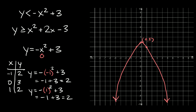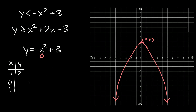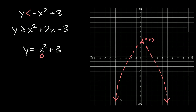Now that the parabola is graphed, the next thing we need to do is figure out if the parabola should be solid or dashed. You figure that out by looking at the original inequality. The inequality symbol is just a less than symbol. If you have a less than or greater than symbol, it's going to be dashed. But if you have a less than or equal to, or greater than or equal to symbol, it's going to be solid. Here we just have less than, so this is going to be dashed.